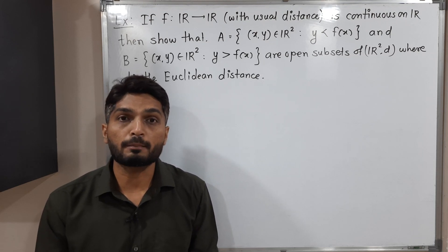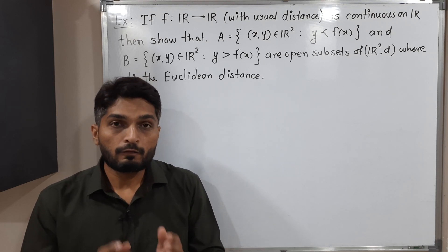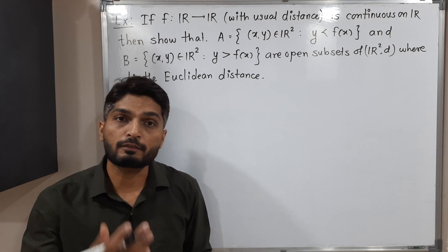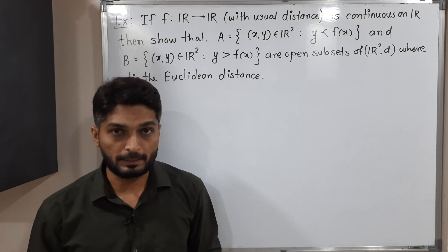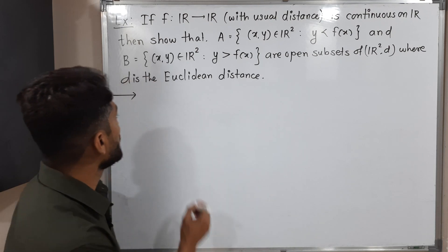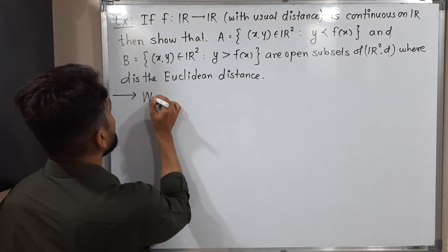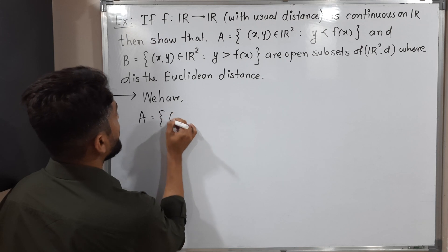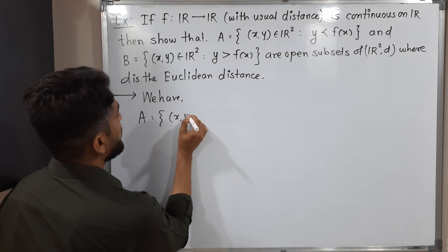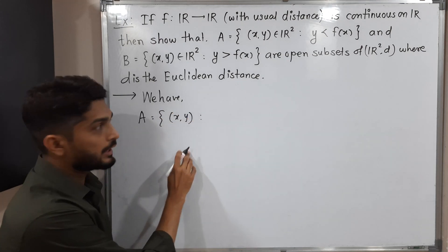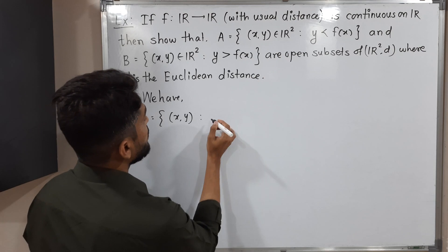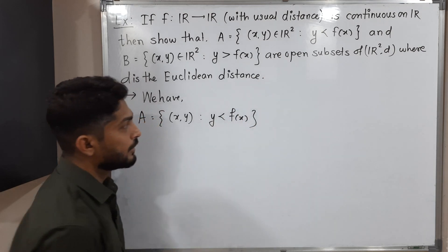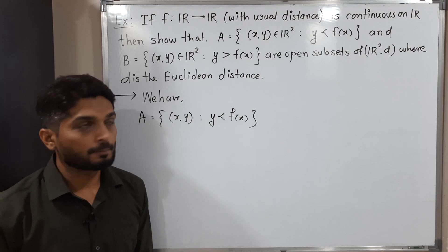We have to prove A and B are open sets. First we will focus on set A and prove that A is open, and after that we will go for set B. So A contains elements of ℝ² of the form (x, y) where the condition is y < f(x). So we have to prove A is open.